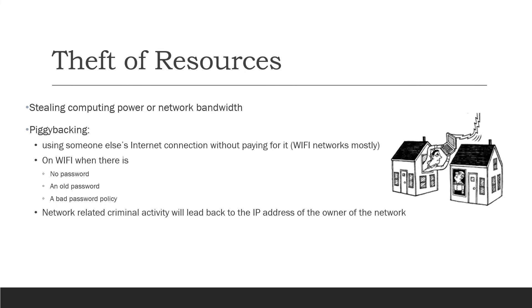Theft of resources could be stealing computer processing power or network bandwidth. A common example is piggybacking — using somebody else's internet connection without paying for it. You find out their Wi-Fi password and use their connection, slowing everything down. If someone has capped Wi-Fi with a monthly data limit, you're consuming their allowance. Network-related criminal activity will trace back to the IP address of the owner of the network, which is an important risk.